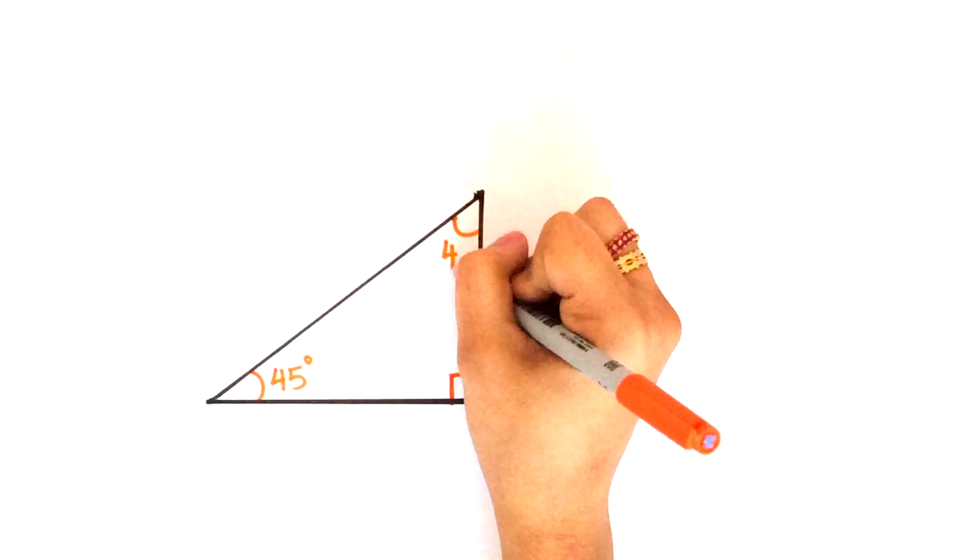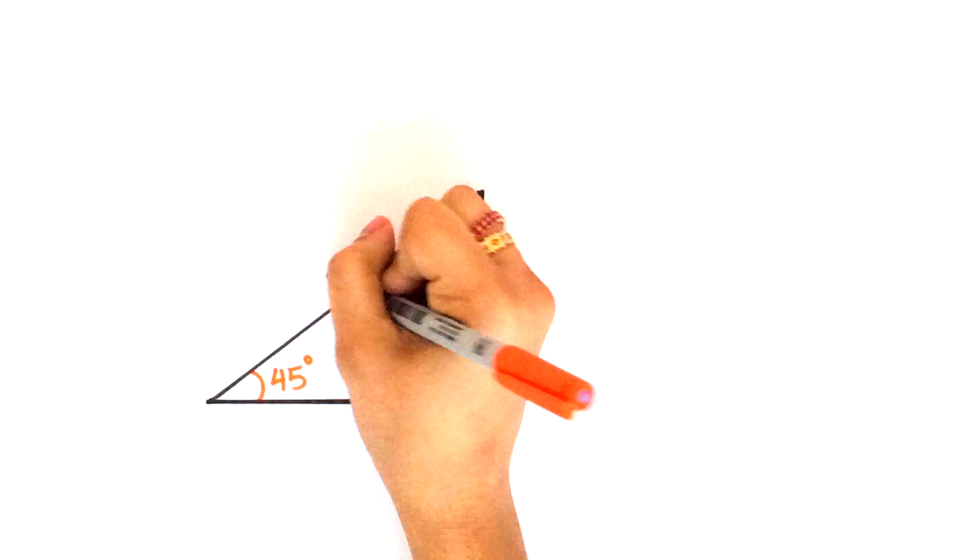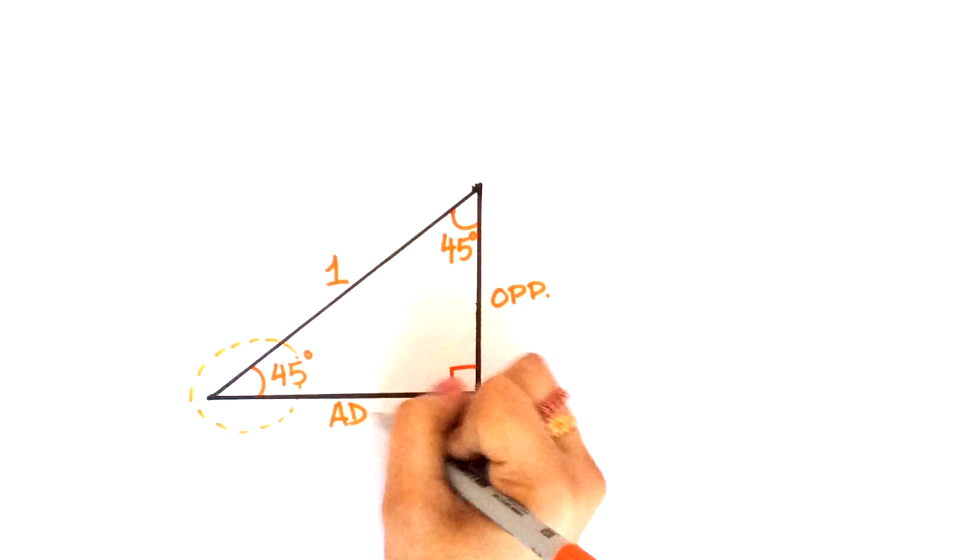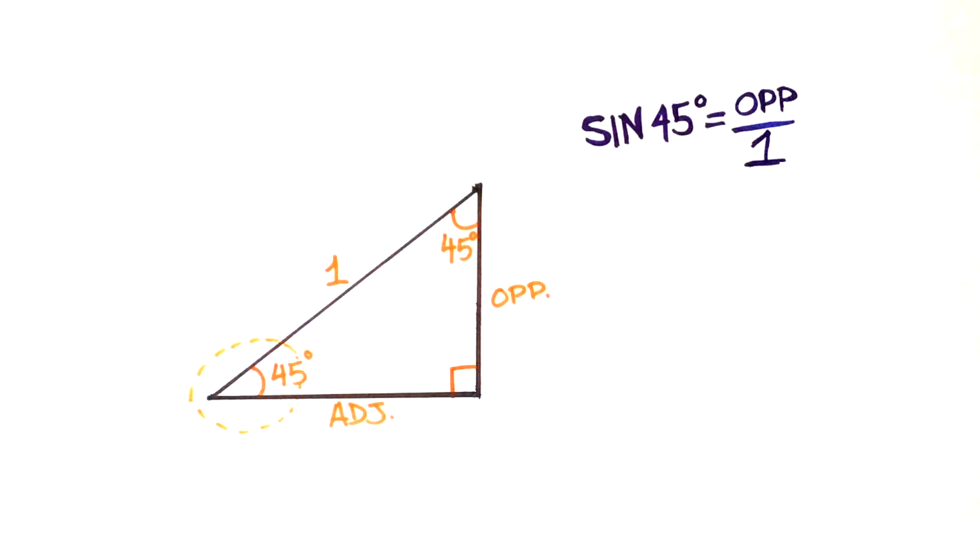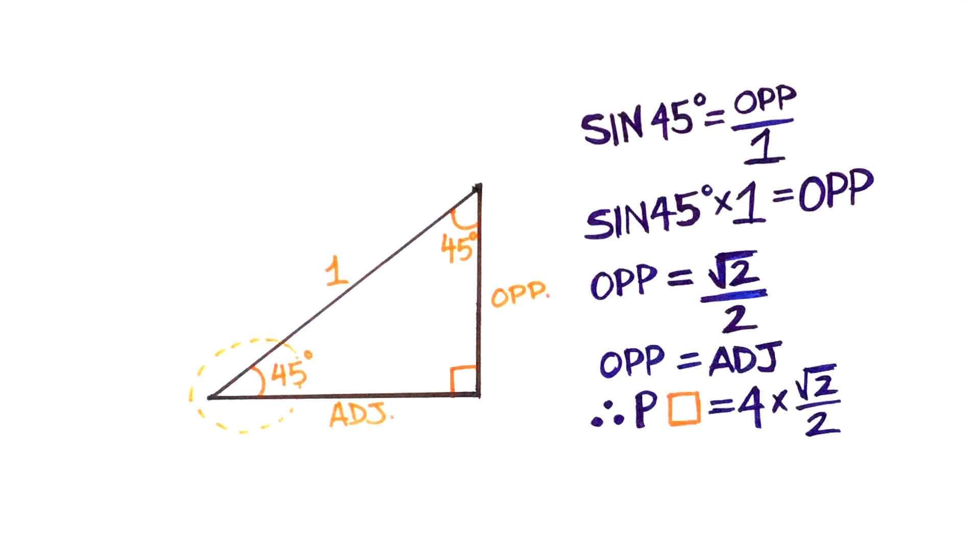We can figure out the length of one side like so. We know that the hypotenuse of this triangle is 1, and we do not know the opposite or adjacent sides. Since they're equal, we can solve for any of them. Sine 45 equals opposite over 1. The opposite side is equal to root 2 over 2. Opposite equals adjacent, and we know that the perimeter of this square is equal to 4 times root 2 over 2, which gives us approximately 2.828.